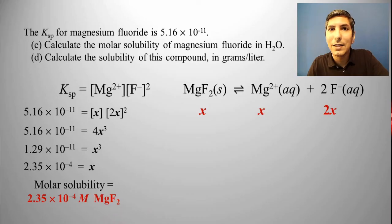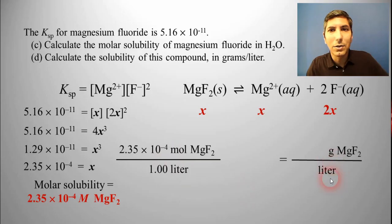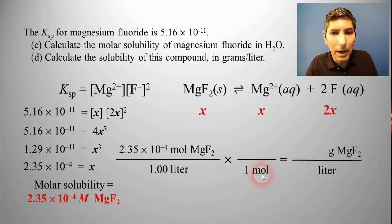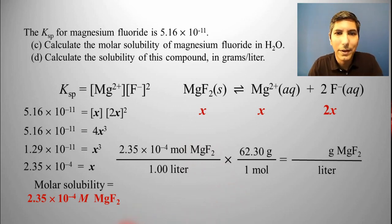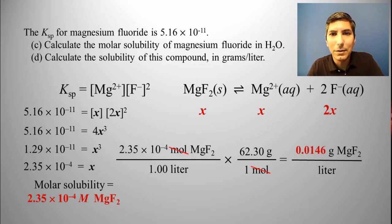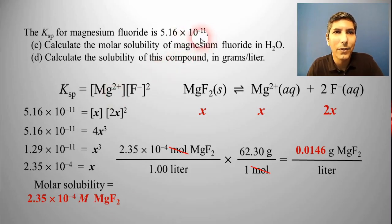For part D, let's calculate the solubility in grams per liter. Take 2.35 × 10⁻⁴ moles per liter of magnesium fluoride and convert to grams per liter. In the conversion factor, one mole goes on the bottom so it cancels, and grams go on top. From the periodic table, magnesium plus two fluorides gives a molar mass of about 62.30 grams per mole. Canceling moles and multiplying across, the solubility in grams per liter is 0.0146 grams per liter — a fairly small number, but not nearly as small as the last example, which makes sense given the larger Ksp.